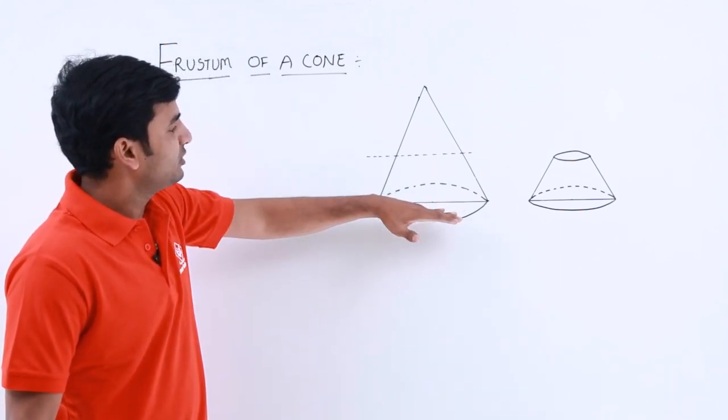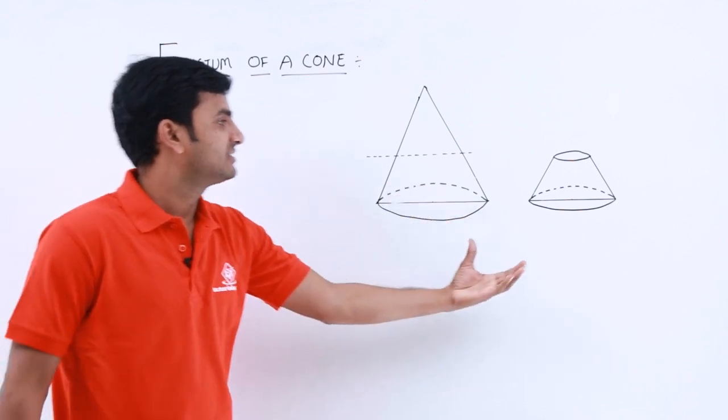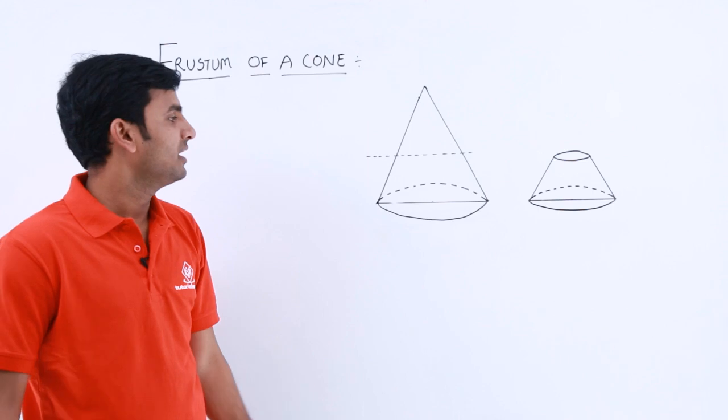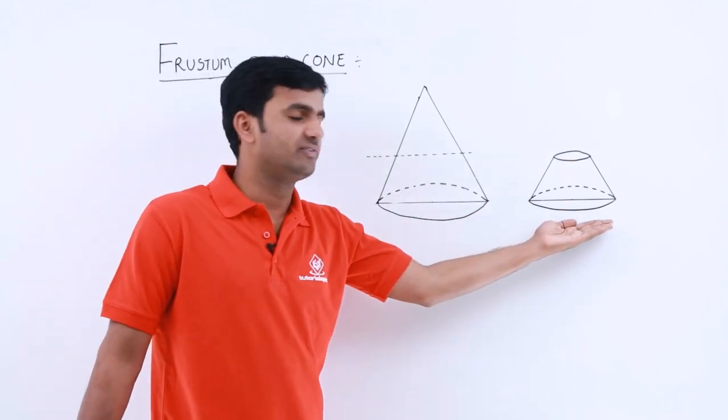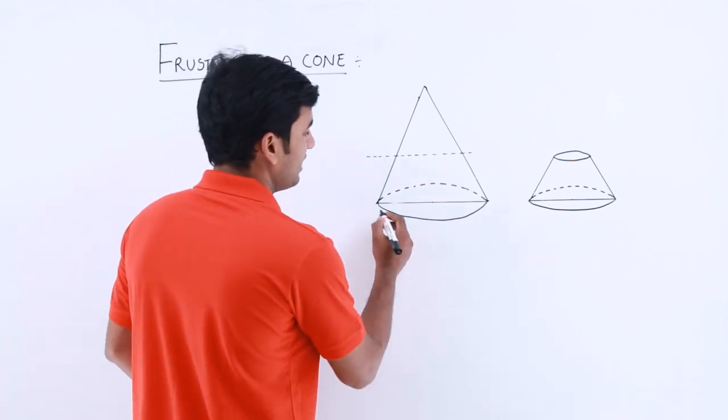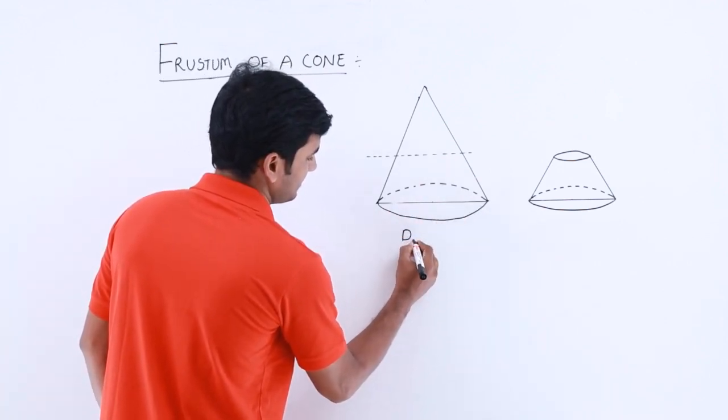...a sub portion comes out like this. This upper portion becomes a smaller cone and this downward portion becomes the frustum. Here in this cone we have a base diameter, let's consider as capital D.